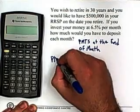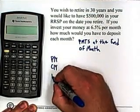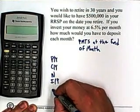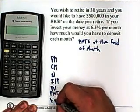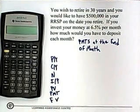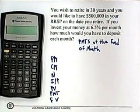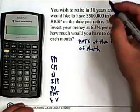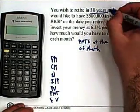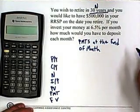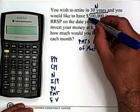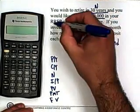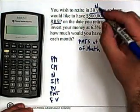Let's set up our functions. This is our standard row of buttons on our calculator: N, IY, PV, PMT, FV. The first thing they tell us is that you want to retire in 30 years, so that will be used for our N. Then it says you would like to have $500,000 in your RRSP — RRSPs are always future values, so this $500,000 is going to be a future value. So I can type in $500,000 beside the FV.